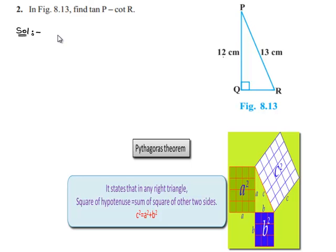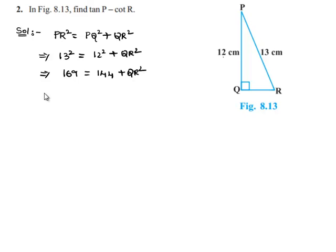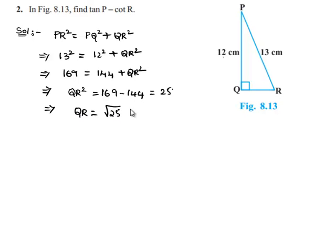In a right angle triangle, the square of the hypotenuse is equal to the sum of squares of the other two sides. So PR square equals PQ square plus QR square, which gives 13 squared equals 12 squared plus QR squared, that is 169 equals 144 plus QR squared. Transposing 144 to the left hand side, QR squared equals 169 minus 144 which is 25, so QR equals the square root of 25.